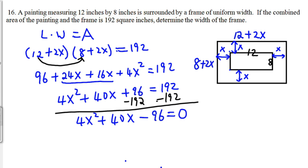Well, since 4 is the common factor, why don't we divide everything by 4? So if we divide everything by 4, we get x squared, plus 10x, minus 24, equal to 0.